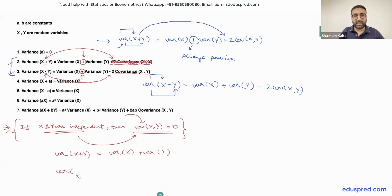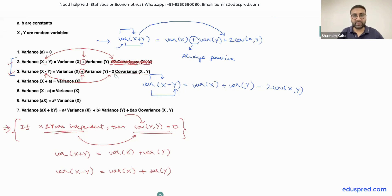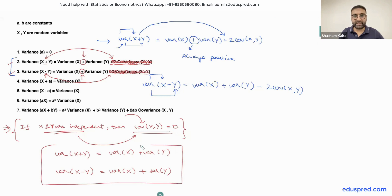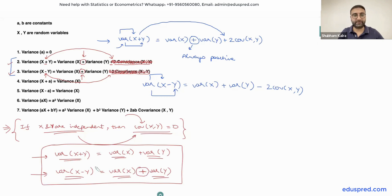Similarly, for property number 3 when x and y are independent, variance of x minus y also equals variance of x plus variance of y — note it is still a plus sign, not minus. The covariance term goes away because covariance is 0. So when x and y are independent, both variance of x plus y and variance of x minus y give the same expression: variance of x plus variance of y.